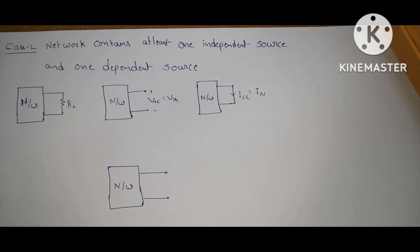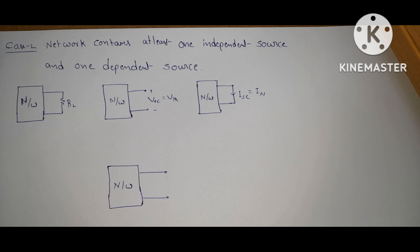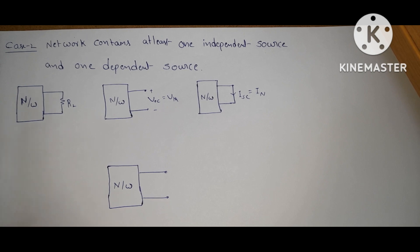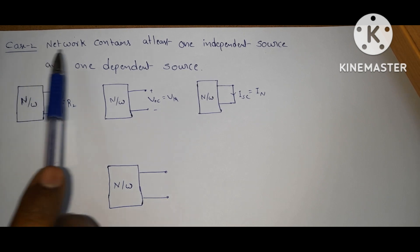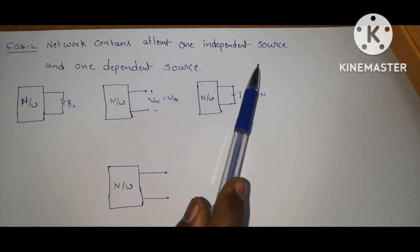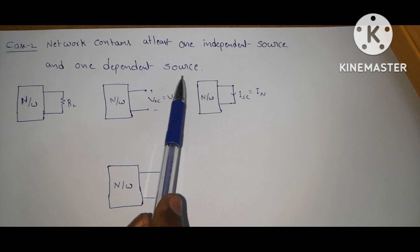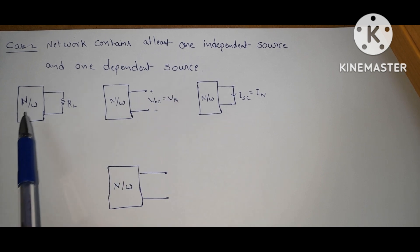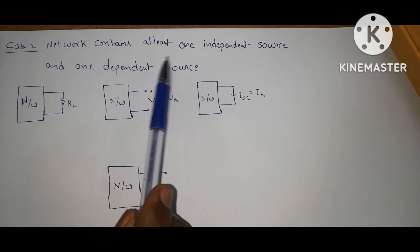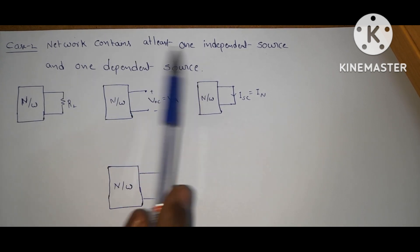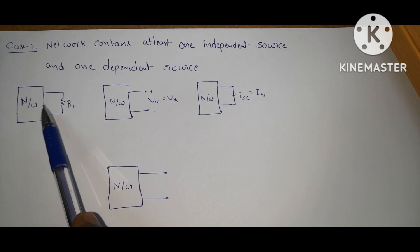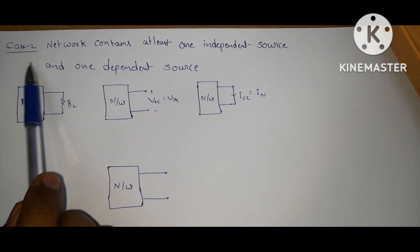Hello everyone. We are solving problems only with Thevenin's and Norton's theorem. Case 1 problems are completed. Now we will see Case 2. Case 2 means if a network contains at least one independent source and one dependent source. In the network, both independent source and dependent source must exist, then we need to apply Case 2.